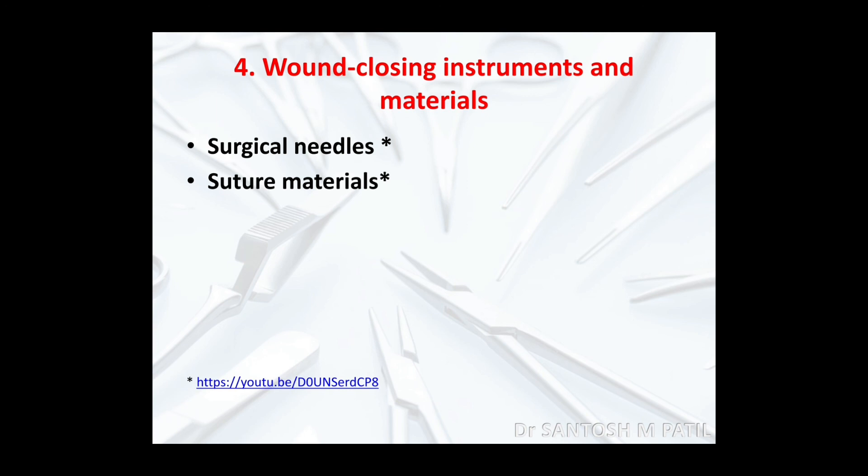The last category is wound closing instruments and materials, which include surgical needles and suture materials. The different types of suture materials, their functions and indications have already been discussed in detail in a previous class — you can click the link below to access that class on needles and suture materials.